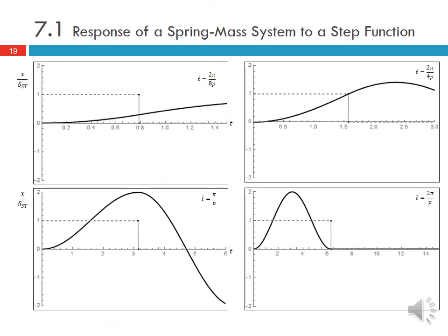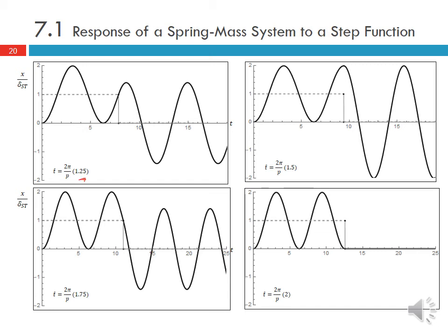So the two cases we considered are kind of the extreme cases, but we could choose any t-hat. For example, t-hat = 2π/8p gives a short initial application followed by free vibration. We can see cases for 2π/4p, π/p, 2π/p — at 2π/p, just as the system returns to zero displacement and zero velocity, we turn the force off and get zero response going forward. Similarly for 2π/p × 1.25, 1.5, 1.75, and 2 — completing two full cycles before shutting off also yields zero response.